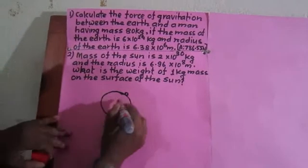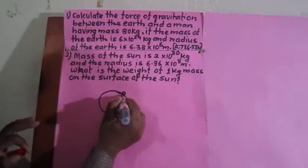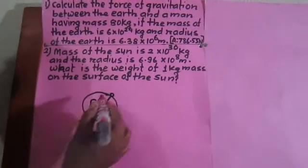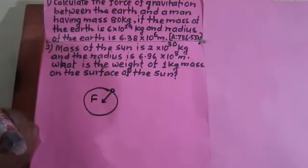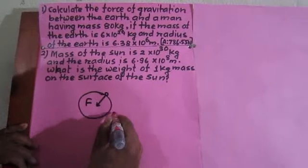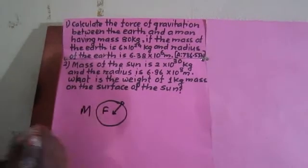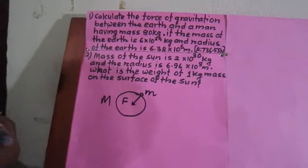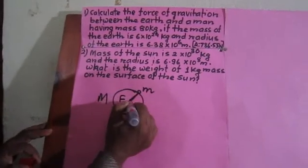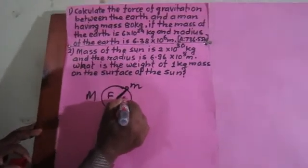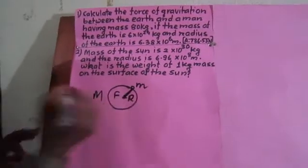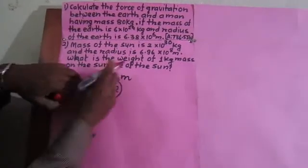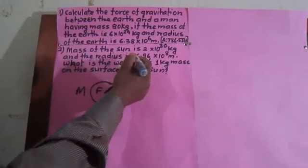The gravitational force between these two is the question — gravitational force F between these two bodies. That's why the bigger mass can be represented by capital M, the small mass by small m, and the radius of this heavenly body by R. In both the numericals we have the same symbols. Now I am going to solve this.